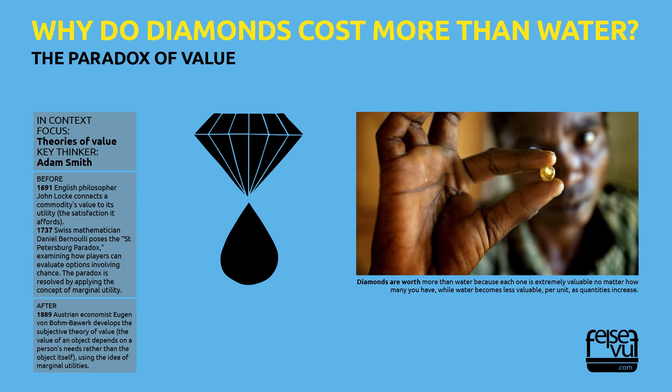After: In 1889, Austrian economist Eugen von Böhm-Bawerk develops the subjective theory of value — the value of an object depends on a person's needs rather than the object itself — using the idea of marginal utilities.